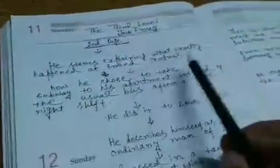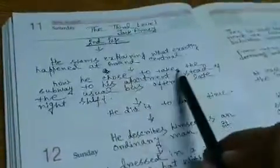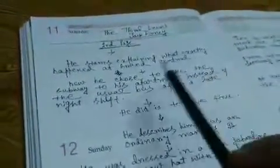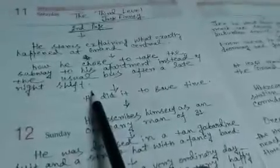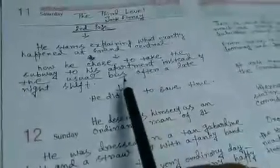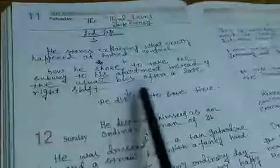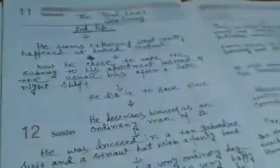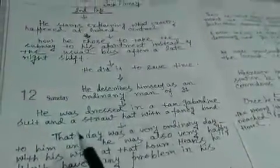He starts explaining what exactly happened at Grand Central with him. How he chose to take the subway to his apartment instead of the usual bus after a late night. One day he came from his office and it was very late at night. That is why he chose a shortcut way, the subway, for coming to his apartment instead of taking the usual bus route. He just wanted to save time.